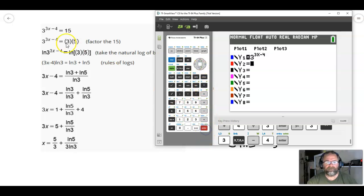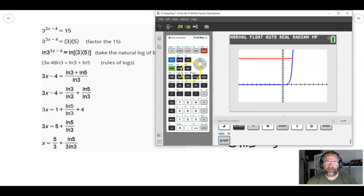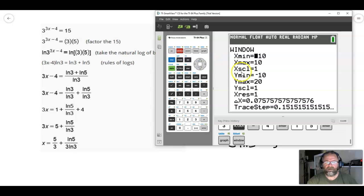And then y2 is just going to be the other side of this initial equation, 15. So this is basically like, y is equal to 15, and y is equal to 3 to the 3x minus 4. And we're going to graph this. Now, I already went to my window and changed the y max value from 10 to 20, so we could see this, because I knew I had the y equals 15 line in there.